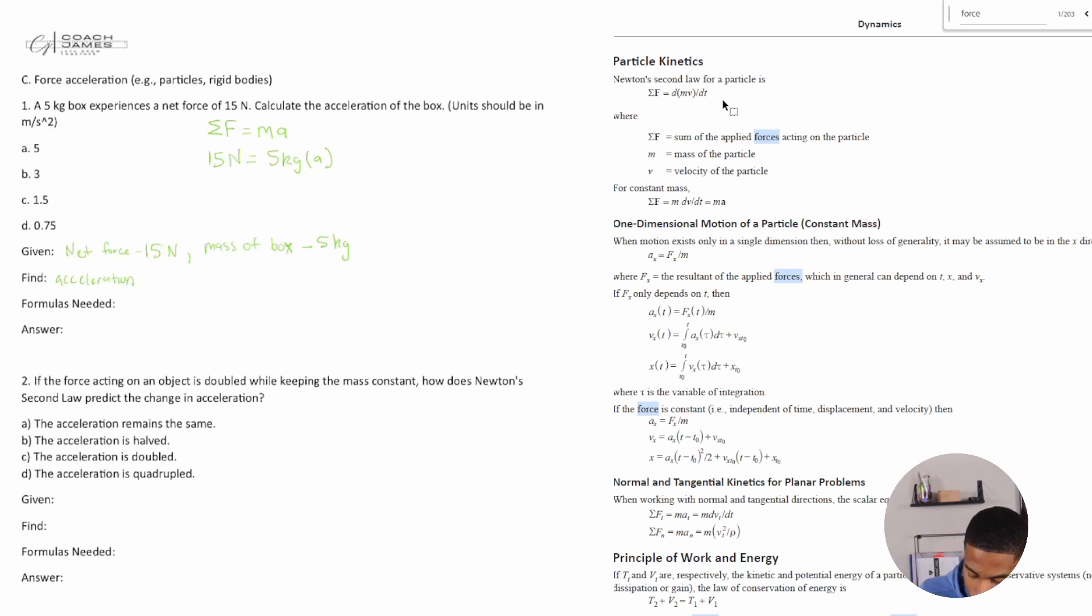15 newtons divided by 5 kg equals 3 meters per second squared. Anytime you do newtons over kilograms, you get meters per second squared. I'll show you why this comes out to be 3 meters per second squared, because I'm sure you're like, okay, that doesn't make sense.